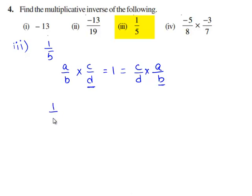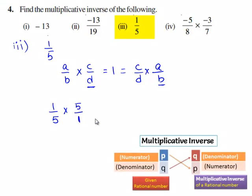Now consider 1 by 5. If we multiply this rational number with 5 by 1, we have the common factors 5 and 1 gets cancelled and we are remained with 1.